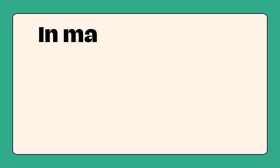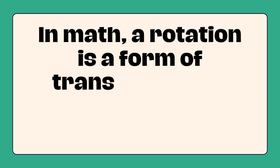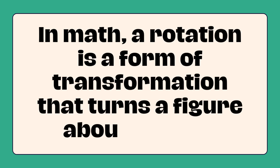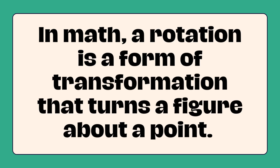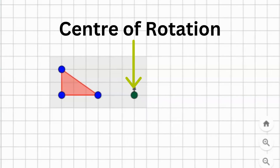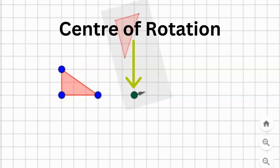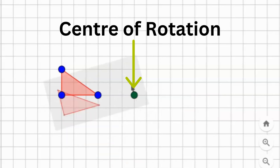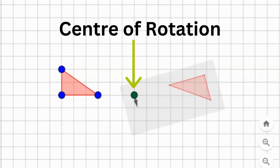In math, a rotation is a form of transformation that turns a figure about a point. We call this point the center of rotation. A figure and its rotated image maintain the same size and shape but face a different direction.